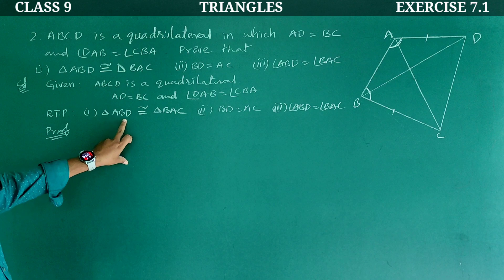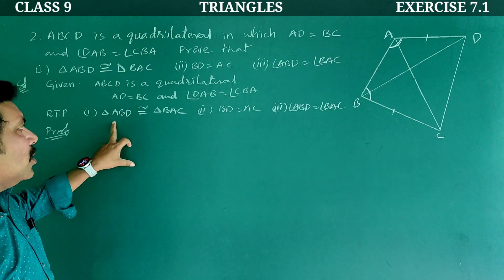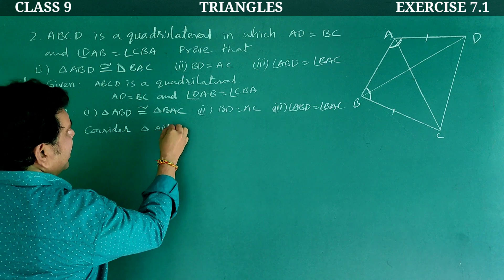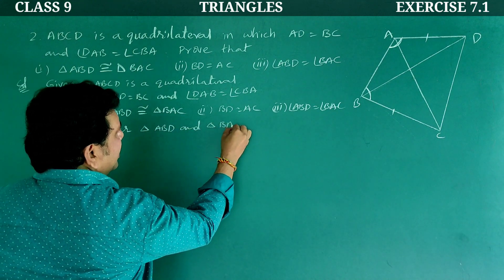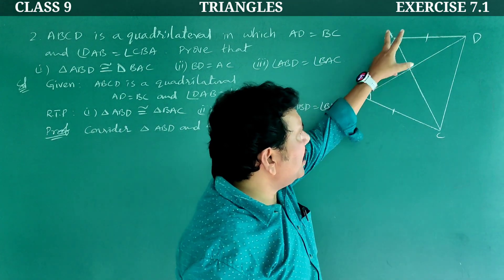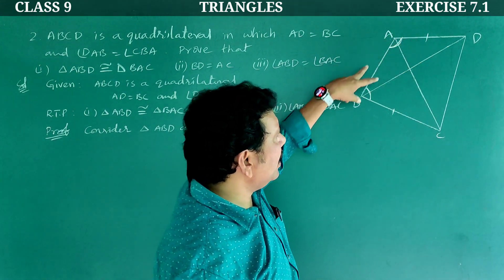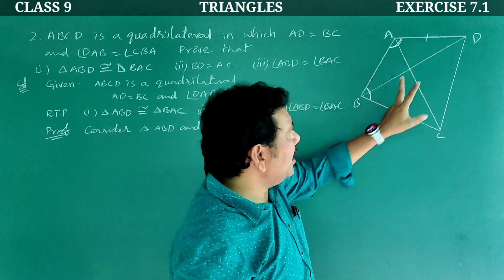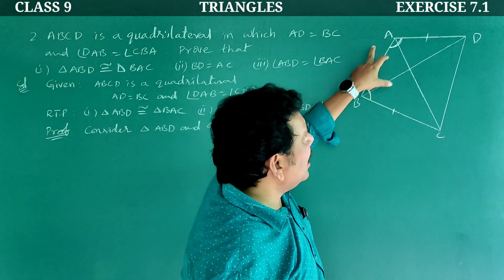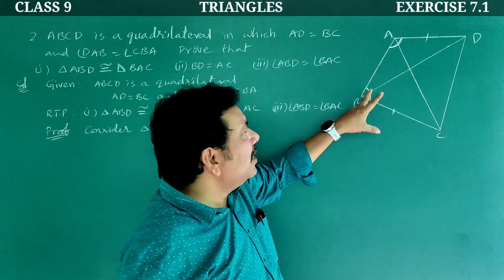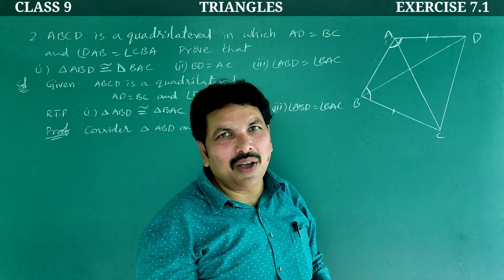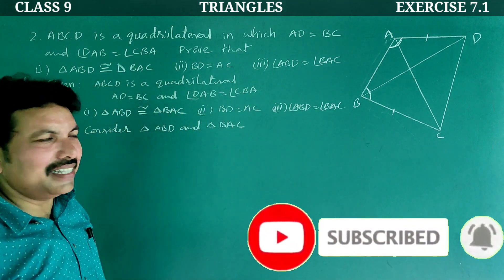Proof. Consider triangle ABD and triangle BAC. In triangle ABD, AD; in triangle BAC, BC — both are equal. Next, angle BAD is equal to angle ABC — as given. Next, AB is the common side for both triangles. So by SAS congruency, triangle ABD is congruent to triangle BAC.